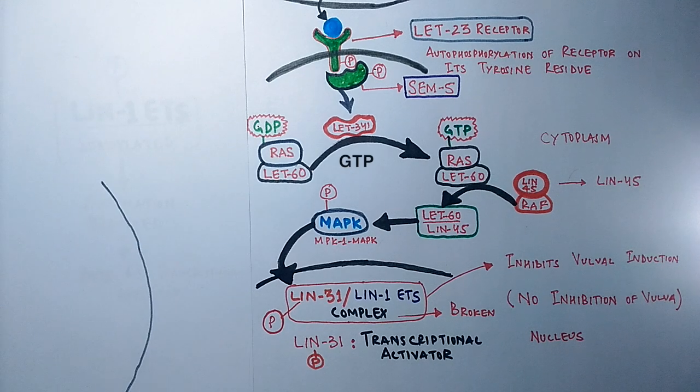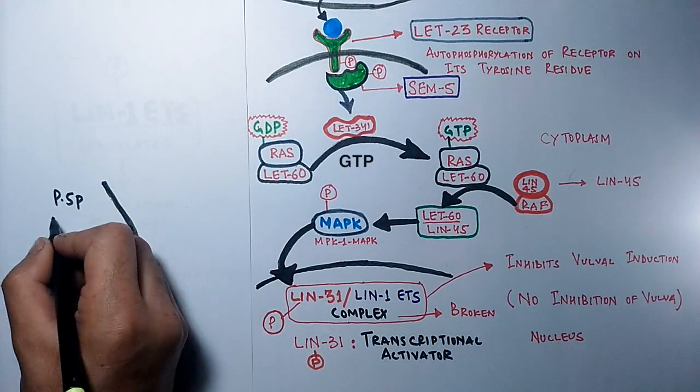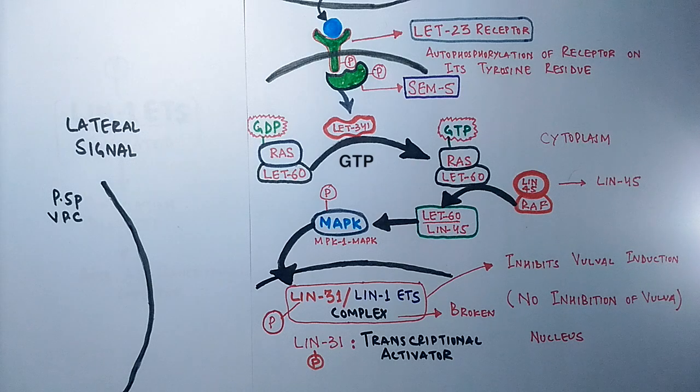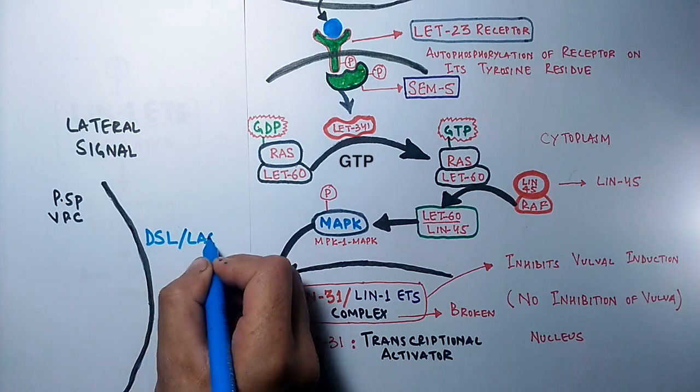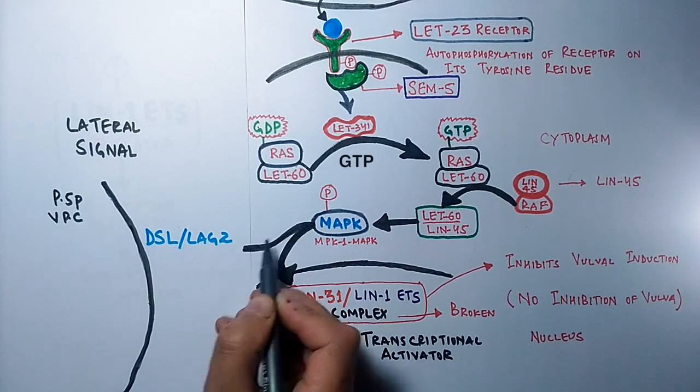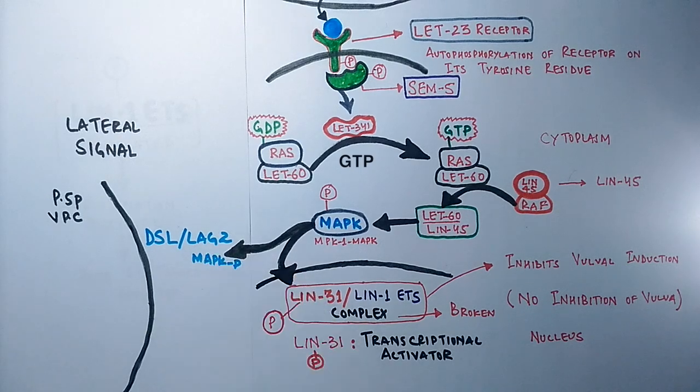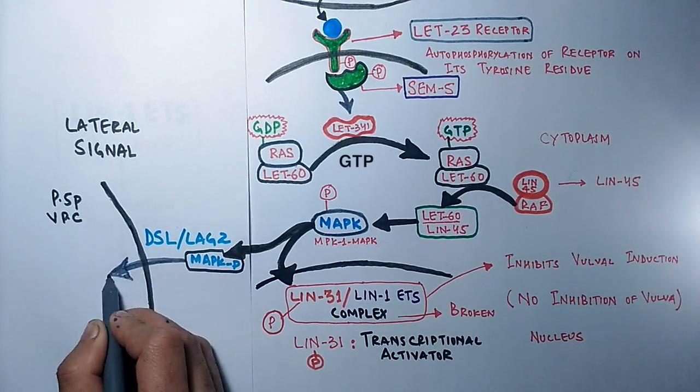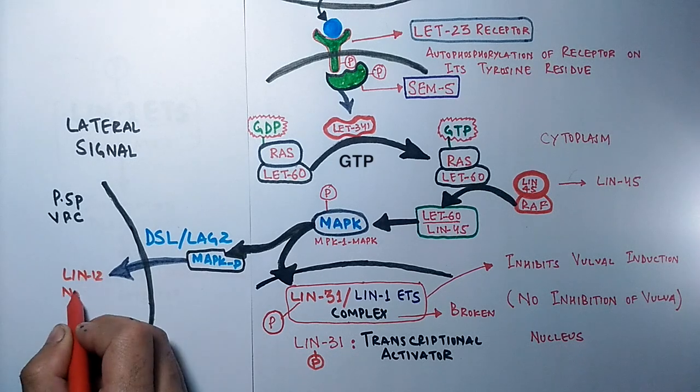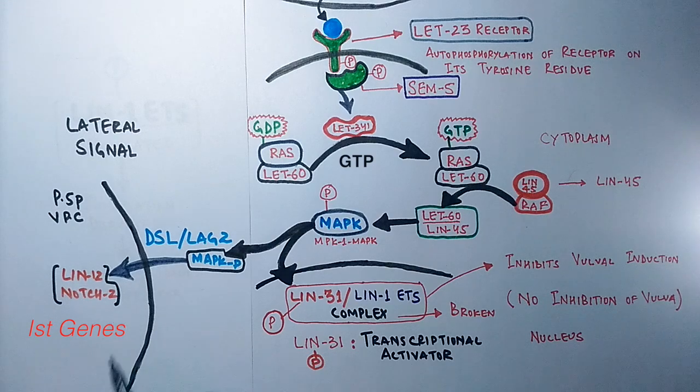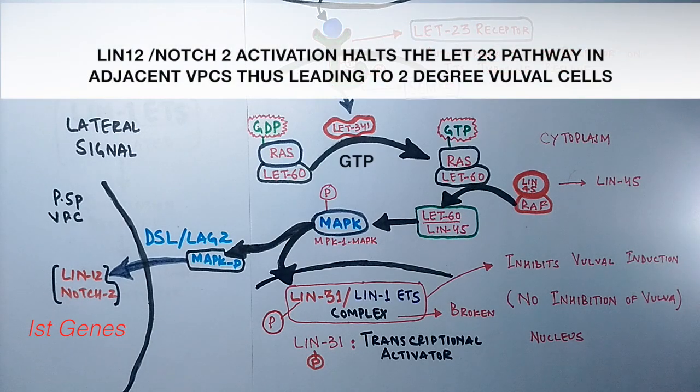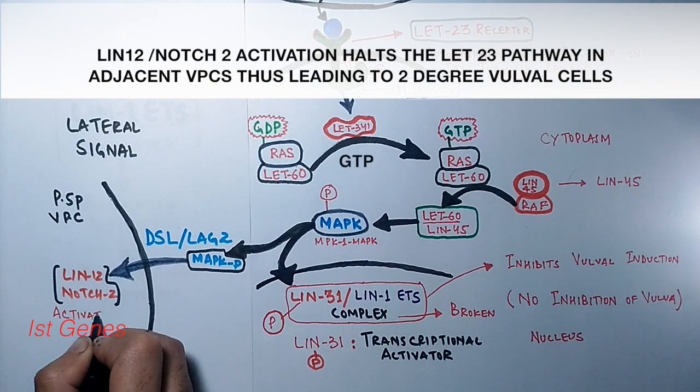We see on its left it has the P5.p vulval precursor cell, whereas activation of MAPK pathway is in the P6.p cell. This activation leads to transcription of delta serrate ligands, DSL/LAG-2. This DSL constitutes the lateral signal towards the adjacent P5.p cell with which lin-12/notch is activated. This lin-12/notch signal activates several genes called lst genes that counteract the let-23 pathway, thus leading to the 2 degree vulval cell fate.